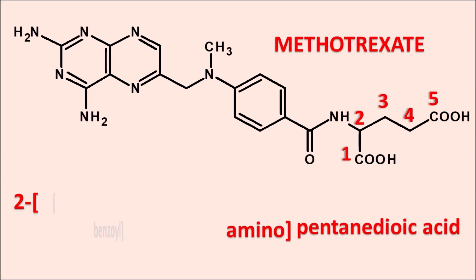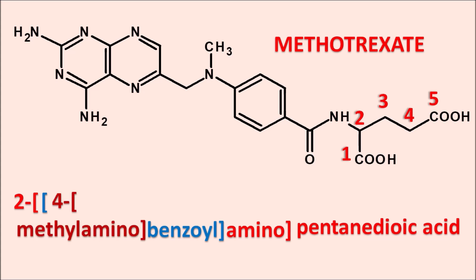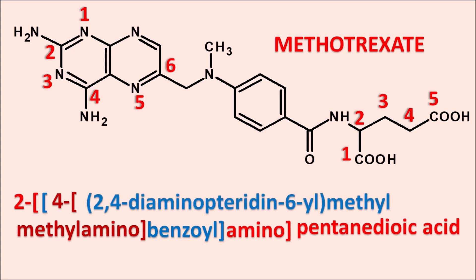To this 2-aminopentanedioic acid, a benzoyl group is attached. At the fourth position of this benzoyl group, a methylamino group is present, so we write 4-(methylamino)benzoyl. To this methylamino group, the pteridine ring system is attached. Numbering the pteridine ring: 1, 2, 3, 4, 5, 6. It is having amino groups at the second and fourth positions, and a side chain at the sixth position attached to a methyl group. So this is 2,4-diaminopteridin-6-yl methyl. That is the complete name of methotrexate.